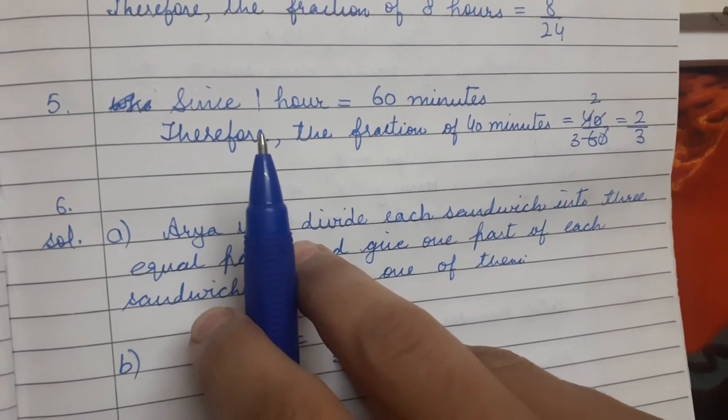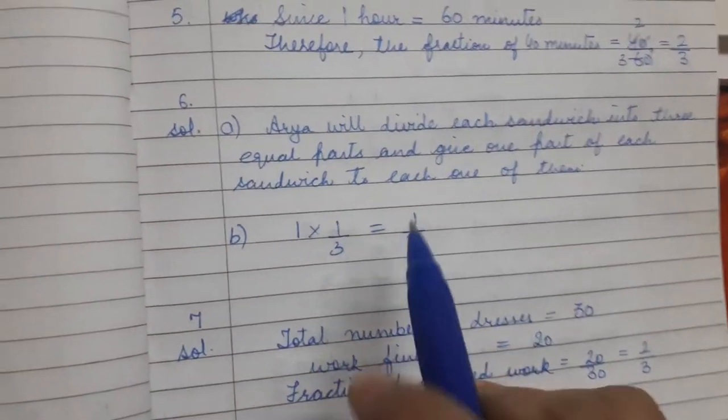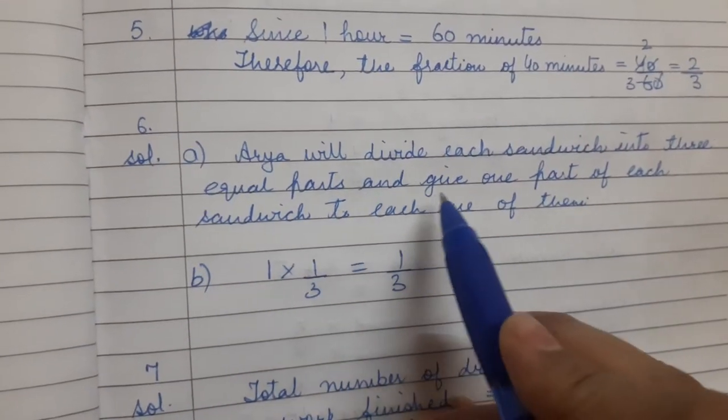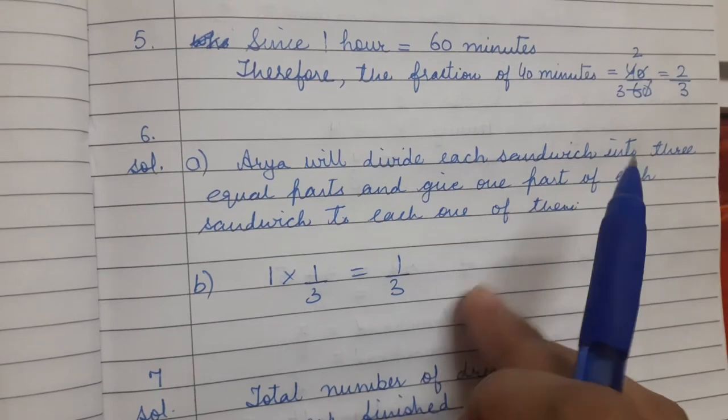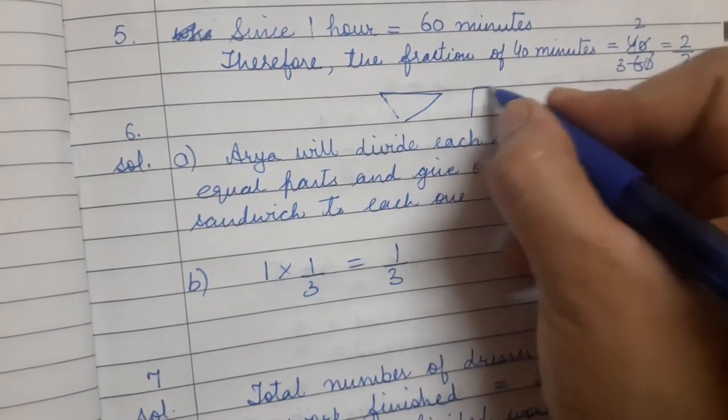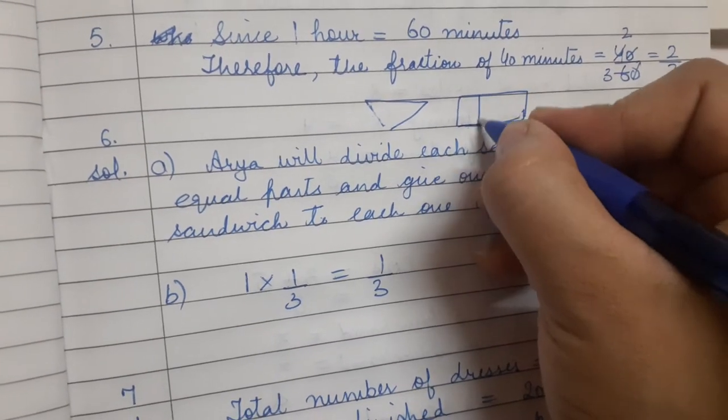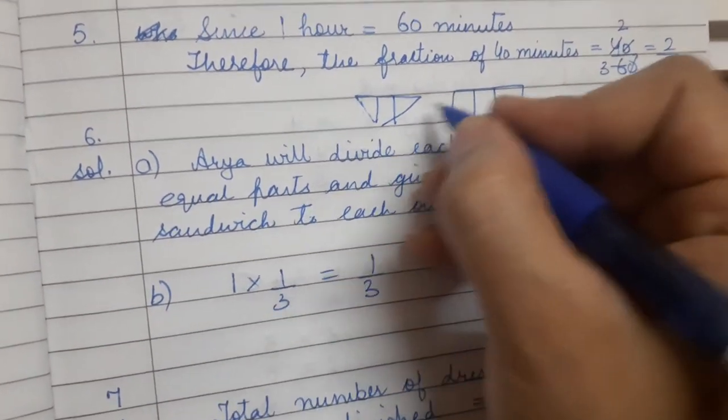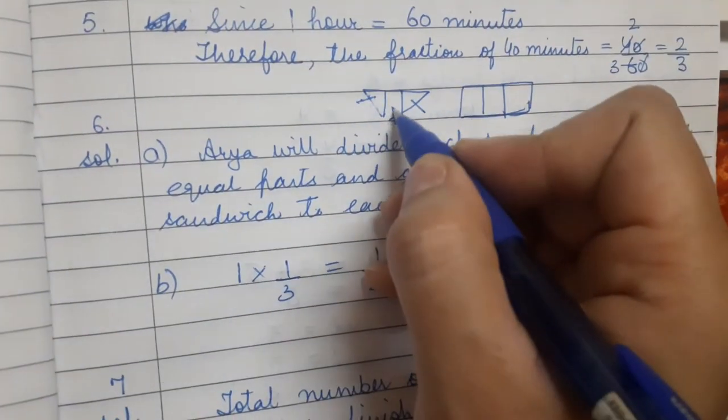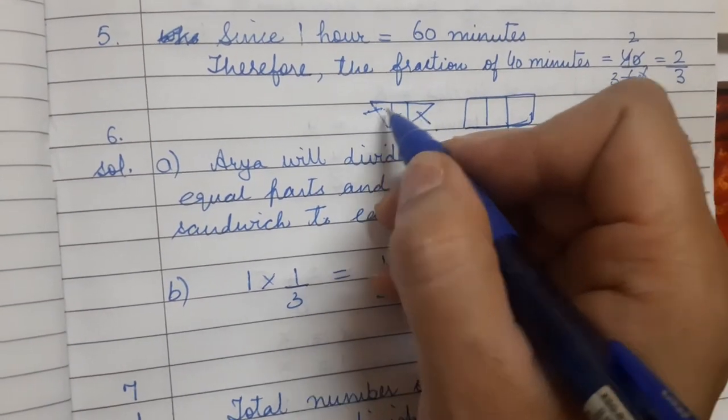So how can Arya divide his sandwiches so that each person has an equal share? Arya will divide each sandwich into 3 equal parts and give 1 part of each sandwich to each one of them. So if suppose this is a sandwich, or sandwich can be rectangular in shape as well, so Arya will divide the sandwich into 3 equal parts like this and give each part to each of them. This part Arya ate, this Abhimanyu ate, this Vivek.